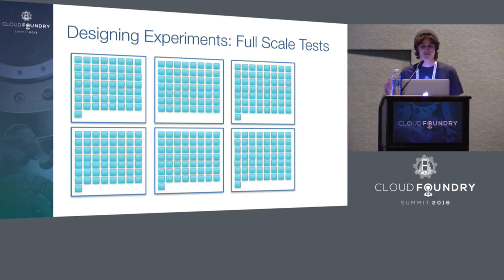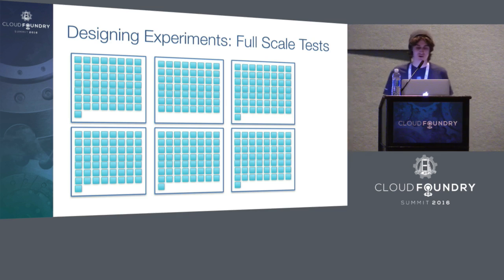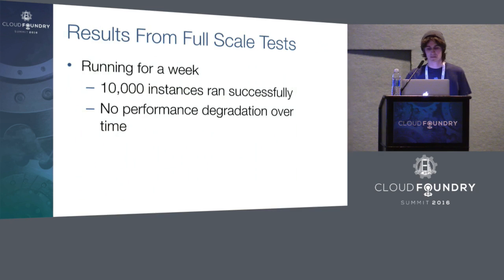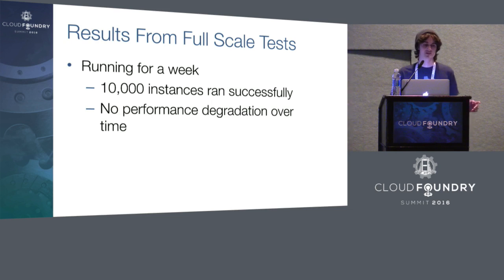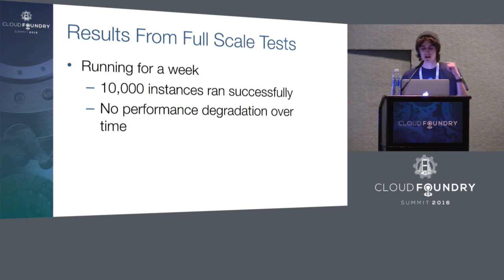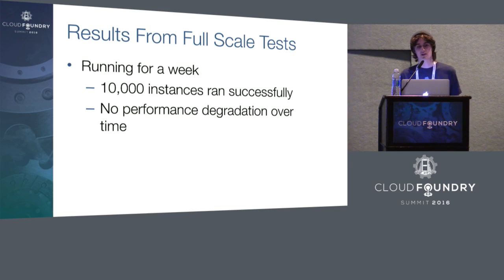This test suite closely reflects the goal of supporting a given number of application instances on a given number of cells. Importantly, while the smoke tests aimed to compete with competitors' numbers, this suite is aimed to accurately reflect Diego's performance to end users and operators — we want to show that Diego can run a large workload for an extended period with no performance degradation. On 100 cells with 10,000 application instances, we saw no performance degradation over time. The BBS API request latency increased from almost nothing to less than a second, and bulk processing loops were well within their operating periods. We were also able to push new workloads onto the environment successfully.